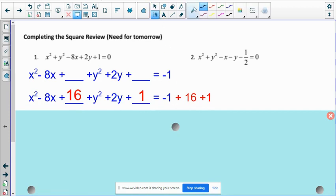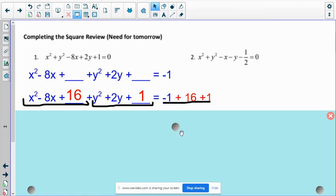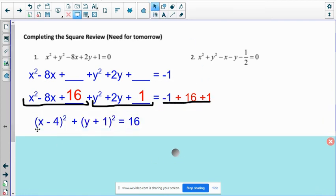After I do that, the next step is I'm actually going to factor this part of it because it'll factor nicely into a perfect square. And I'm going to factor my y's. And on this side, I'm just going to add that all together.